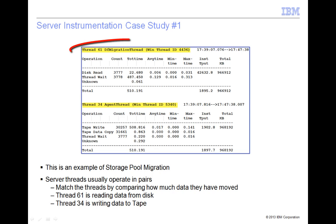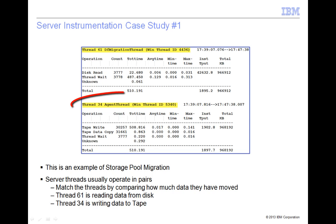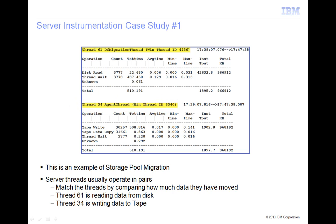In this example, thread 61 is performing the disk read operations from the source pool and thread 34 is performing the tape write operations to the target pool. To match the threads, look for the two threads that move nearly the same amount of data.